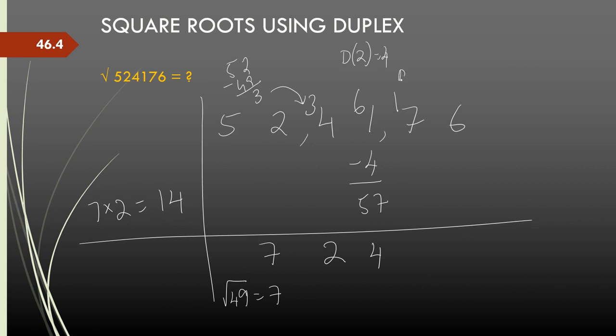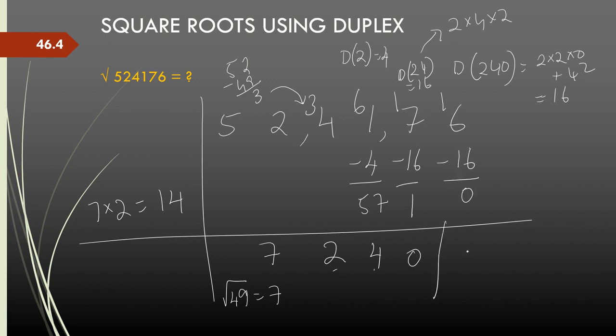And then, here the D, I take the two digit number 2 and 4. So that is how the D will increase each time. So this is 16. So 17 minus 16. So D of 2 and 4 is 2 into 4 into 2, 2AB. So that is 16. So 17 minus 16 is 1. Now, here it is 0. So 1 divided by 14 is 0 times 1 carried forward. Now, here it will be D of 240, a three digit number 240, which is 2 times 2 into 0 plus 4 square, which is equal to 16. Adjustment is 16 again, 0. So 724 is the square root of 524176.